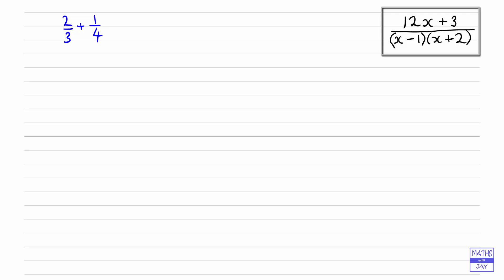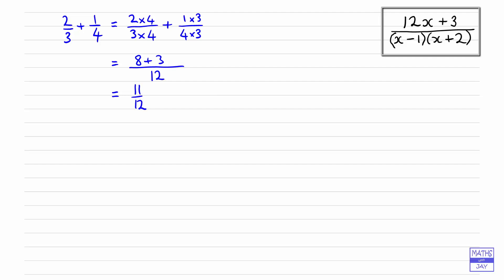So this should be really simple — we're adding two thirds and a quarter together, and the important thing here is the method that we're using. We've got to multiply the numerator and denominator of the first fraction by the denominator in the other fraction, so we're multiplying both the two and the three by four. And similarly for the second fraction, we're multiplying the one and the four by three. So our denominator is 12, and two fours are eight, one times three is three, so eight plus three is 11. Our fraction there is 11 over 12. So that should just be very simple revision.